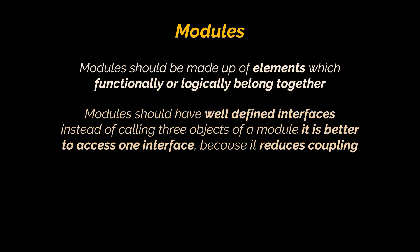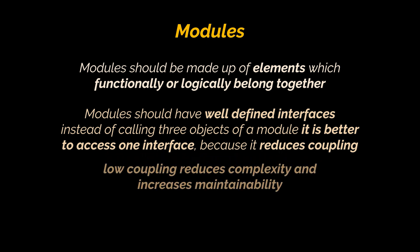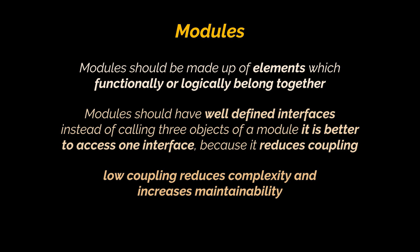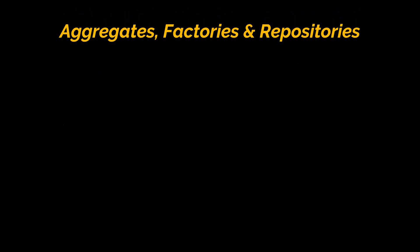Modules should be made up of elements which functionally or logically belong together, and should have well-defined interfaces accessed by other modules. Instead of calling three objects of a module, it is better to access one interface because it reduces coupling. Low coupling reduces complexity and increases maintainability. It is easier to understand how a system works when there are few connections between modules which perform well-defined tasks, rather than when every module has lots of connections to all the others.